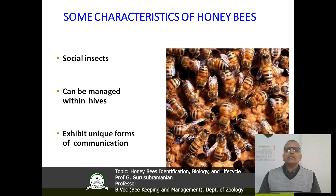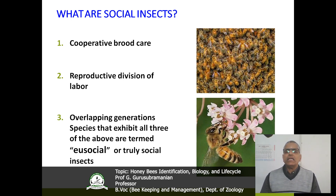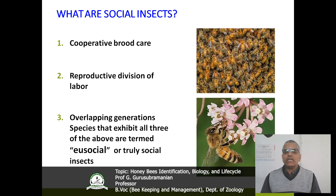Whenever you are coming to the characteristics of the honeybees, the honeybees are coming under the category of social insects. So they can be managed within beehives and exhibit unique forms of communication. What do you mean by social insects? There are three criteria by which we designate this term: number one is cooperative brood care, number two is reproductive division of labor, and third one is overlapping generations. Based upon these three criteria, we are categorizing the honeybees under eusocial insects.